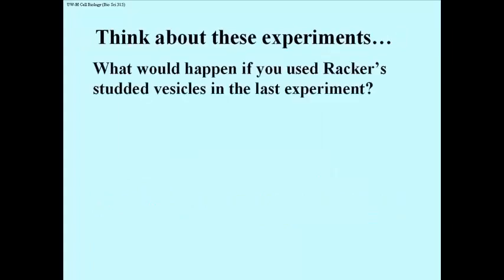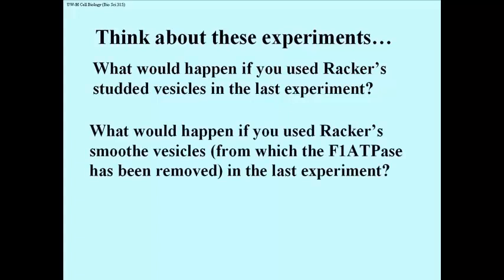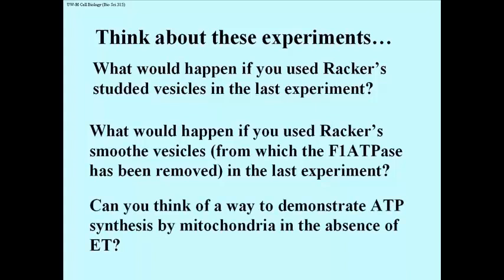Let's repeat the experiment using Racker's studded vesicles — what would happen? Then repeat the experiment using his smooth cristae membrane vesicles — what would happen then? And here's a challenging one: since electron transport can be separated from ATP synthesis, can you come up with an experiment to show that mitochondria can actually make ATP in the absence of electron transport?